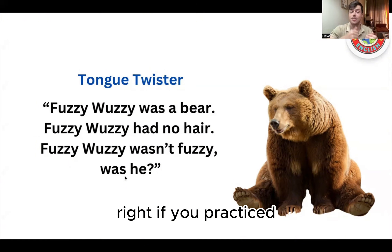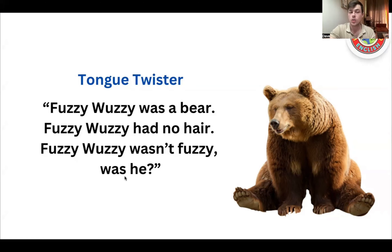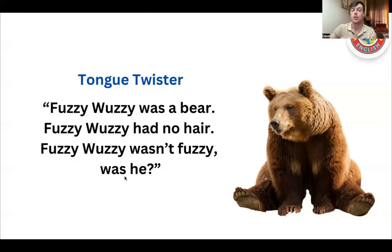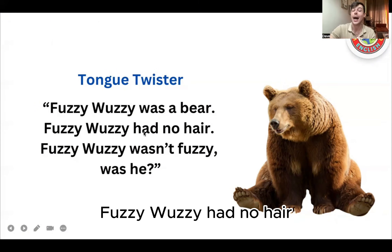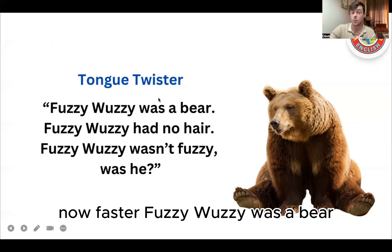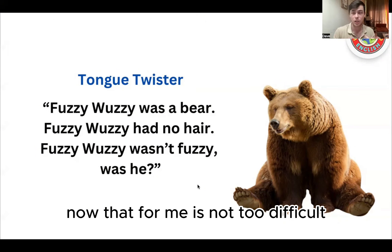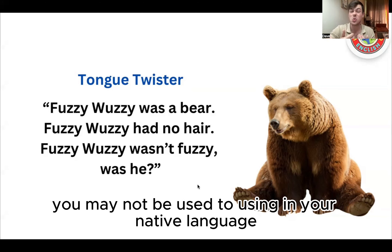If you practiced, good job. If you didn't, no problem — we can do this again but faster. I will read it two times. The first time I will read it normally, the second time I will read it fast. This is what makes it a tongue twister. So here I go: Fuzzy Wuzzy was a bear, Fuzzy Wuzzy had no hair, Fuzzy Wuzzy wasn't fuzzy, was he? Now that for me is not too difficult, but maybe for you it's quite difficult.